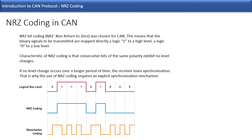In NRZ coding, logical one is represented as a high level and logical zero is represented as a low level. Let's see the diagram below showing how NRZ coding and Manchester coding work. For logical bus level zero, in NRZ coding it is directly represented as zero.